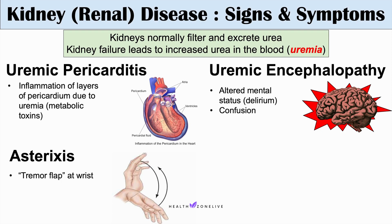Uremia can cause other signs and symptoms as well, including nausea and vomiting. Patients in an advanced stage of kidney disease are often very nauseous and don't feel well. This can lead to anorexia or weight loss, where patients become very thin, caused ultimately by the nausea and vomiting and very low appetite.